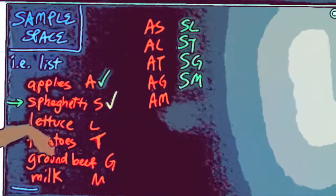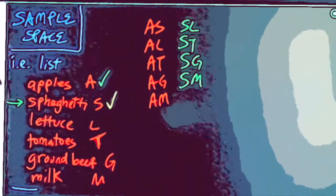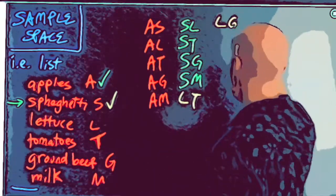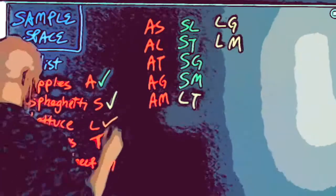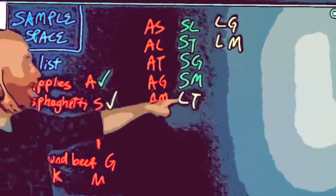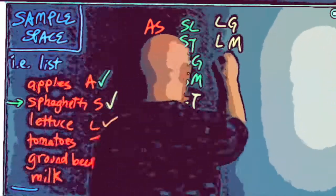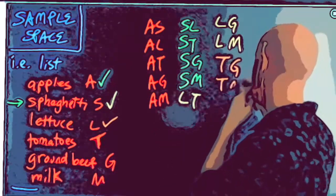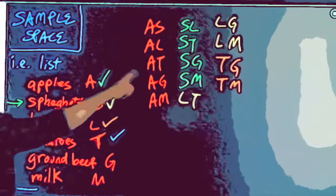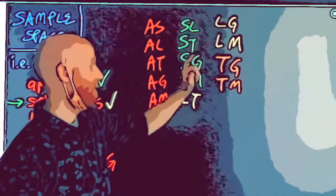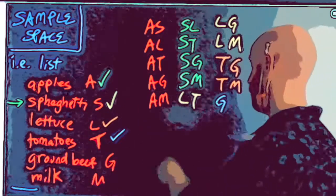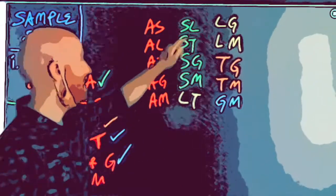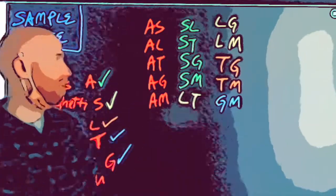How many ways can I forget lettuce? I already have lettuce with apples and lettuce with spaghetti, but I could also forget lettuce with tomatoes, ground beef, or milk. For tomatoes, I already have apples-tomatoes, spaghetti-tomatoes, and lettuce-tomatoes, so I can still forget tomatoes with ground beef and milk. Ground beef: already have apples, spaghetti, lettuce, tomatoes — so just ground beef with milk. Milk is already fully covered.